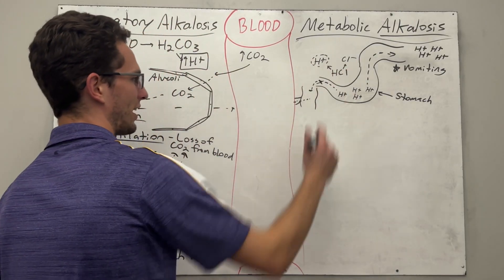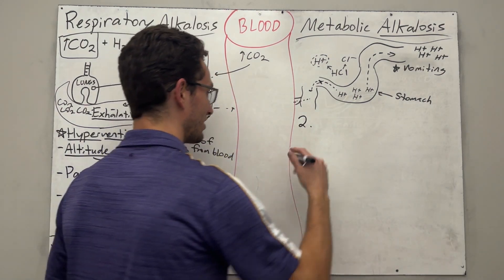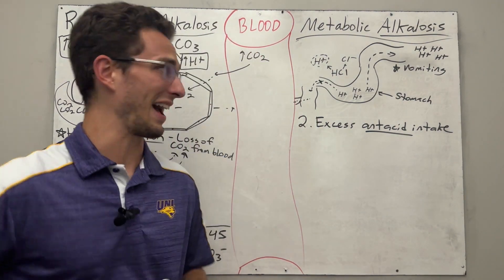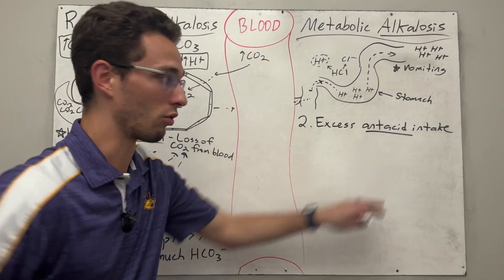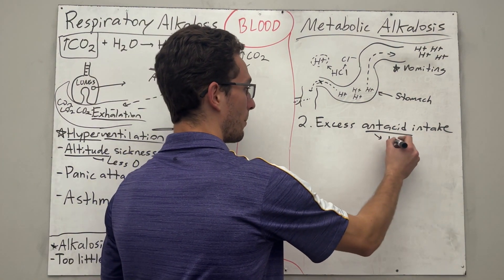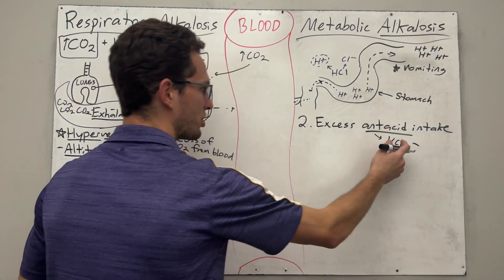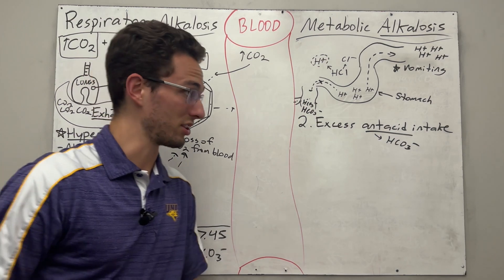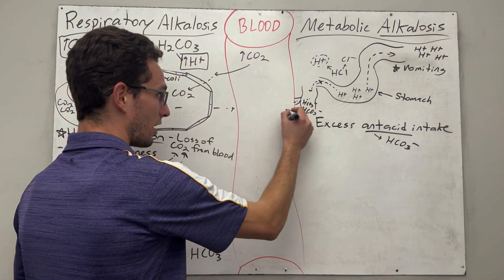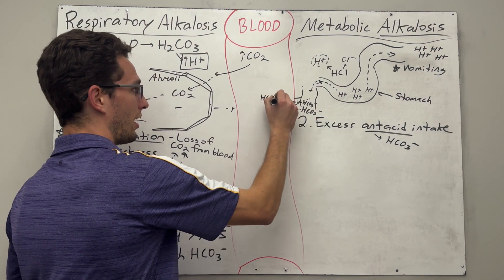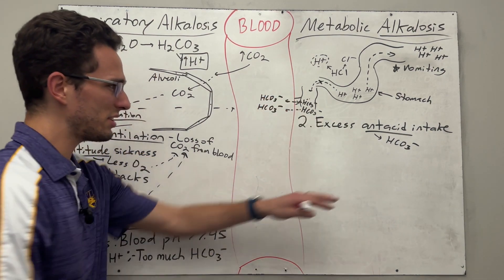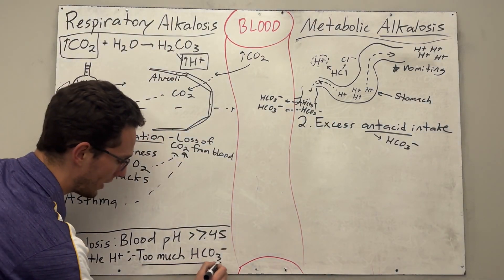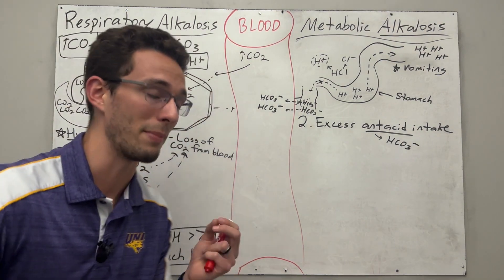The second way you can experience metabolic alkalosis is through excess antacid intake. Antacids are usually taken if you have heartburn — you're getting acid up into the esophagus. So you take antacids that are very rich in bicarbonate. If you are dumping a bunch of bicarbonate into your intestinal tract, it will accumulate there. And just like the good intestinal cells do, they will absorb that — drawing a lot of bicarbonate into the bloodstream. So if you take antacids chronically, you could be absorbing too much bicarb, and with too much bicarb we have alkalosis.